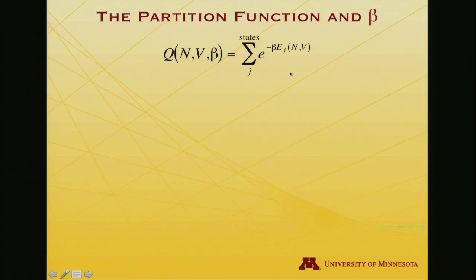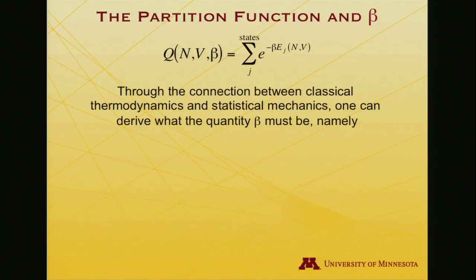And so here is that expression appearing in the denominator. Sum over states, indexed by j in this instance, e to the minus beta e sub j, and it is upon number and volume that the energy depends. Now, you can actually make a connection between classical thermodynamics and statistical mechanics, which is a bit beyond what I want to do here. It's more serious statistical mechanics that allows you to actually derive what is beta. Instead, I'm just going to present it. Beta is one over Boltzmann's constant times the temperature. And that has units of energy.